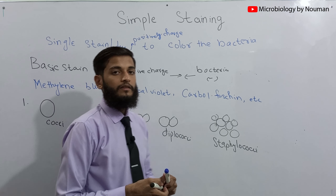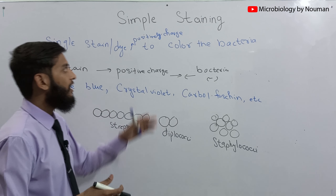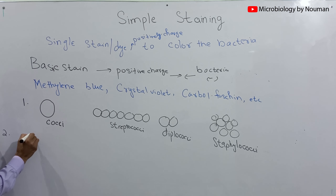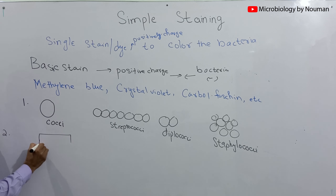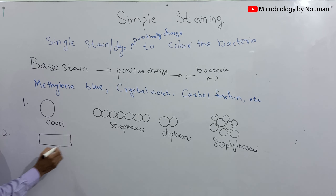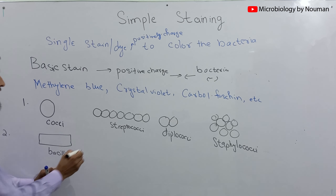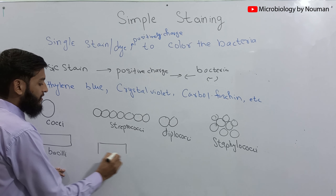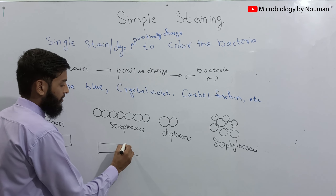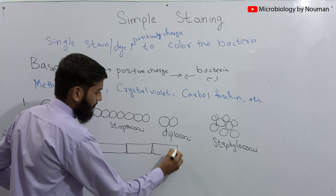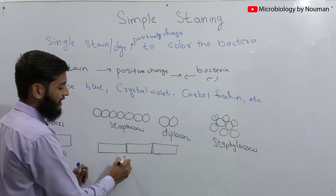The second shape that can be seen after simple staining is a rod-shaped structure — we call them bacilli. These bacilli can be arranged in chains, which we call streptobacilli.